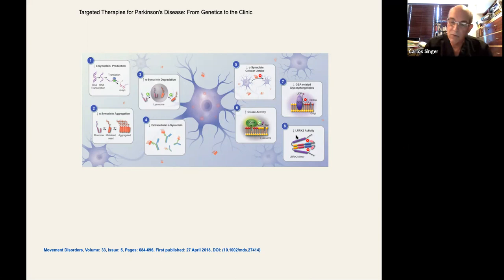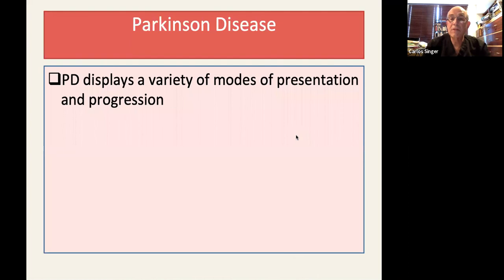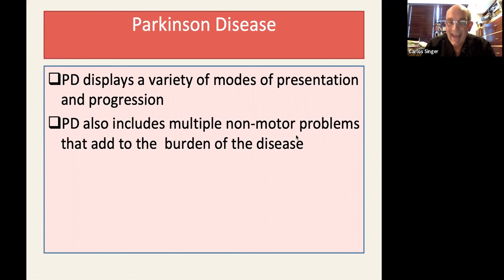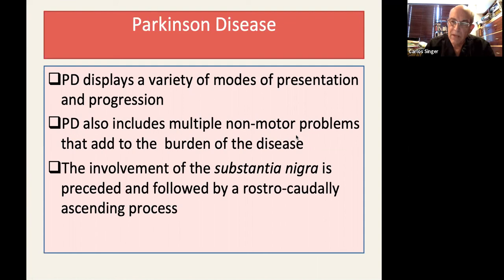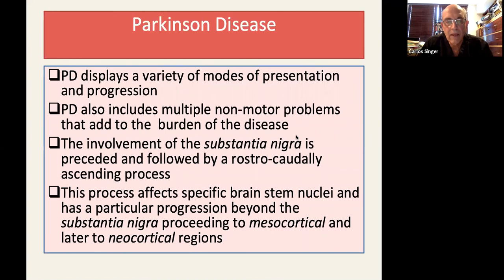Conclusions. Parkinson's disease displays a variety of modes of presentation and progression. It also includes multiple non-motor problems that add to the burden of the disease. The involvement of the substantia nigra is preceded and followed by a rostrocaudally ascending process. This process affects specific brainstem nuclei and has a particular progression beyond the substantia nigra, proceeding to mesocortical and later to neocortical regions.